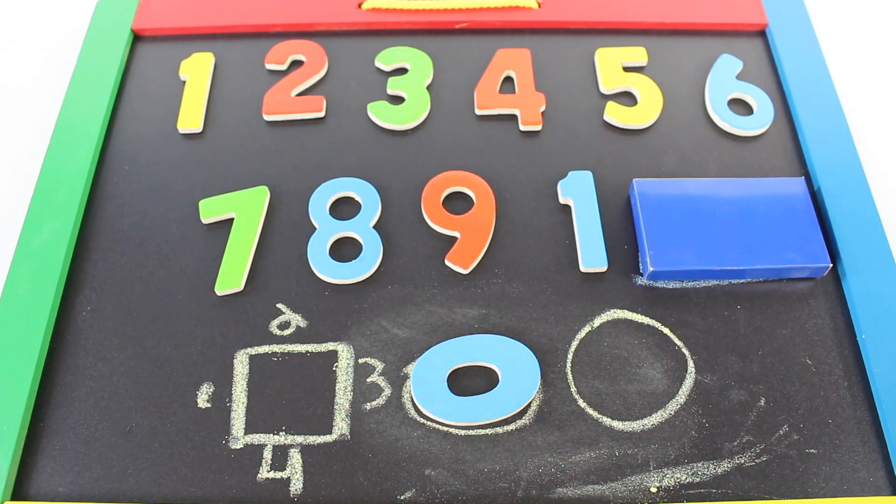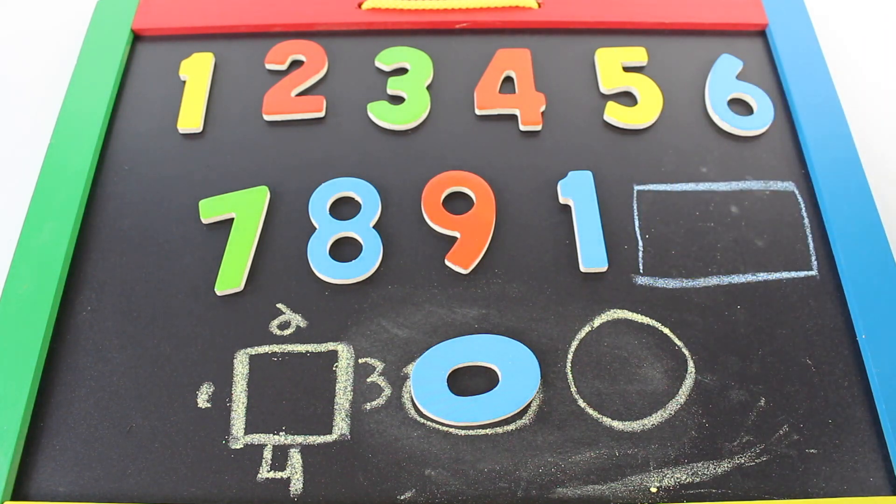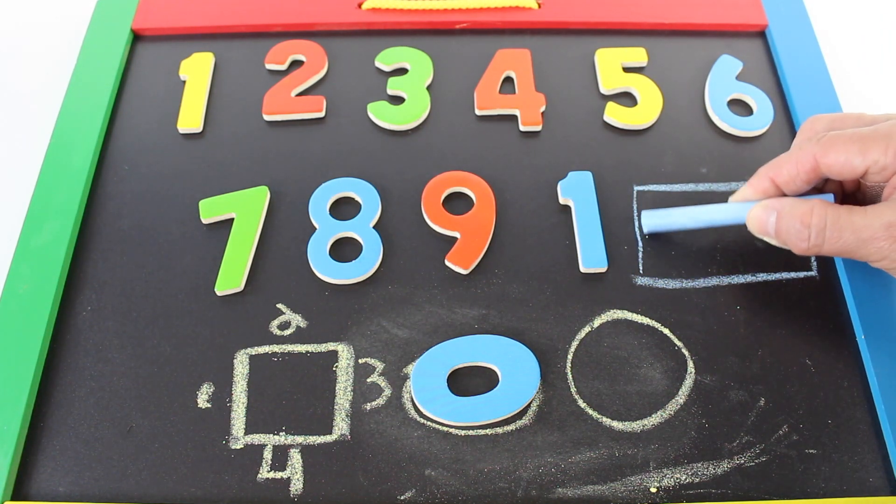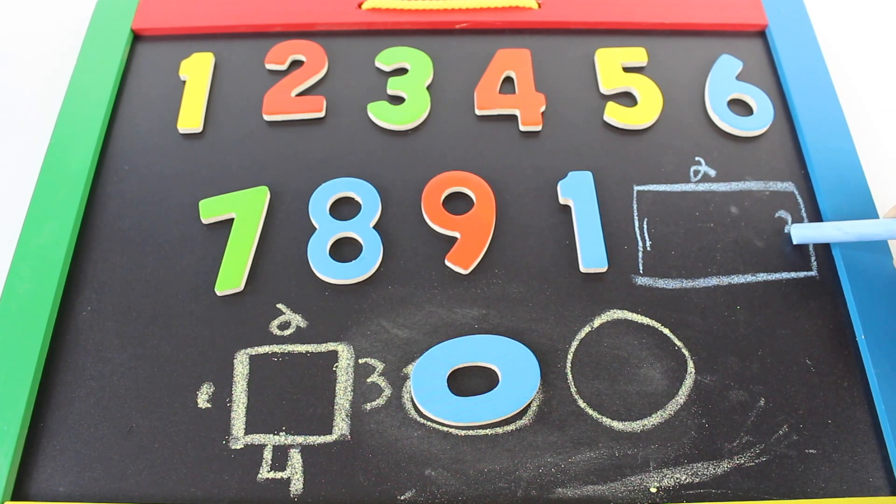Rectangle. It's like a square, but two sides are longer. It also has four sides. One, two, three, four.